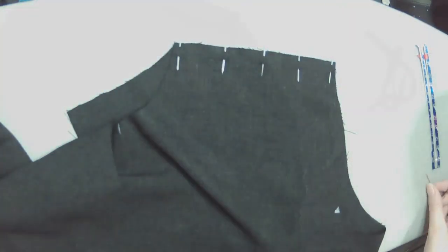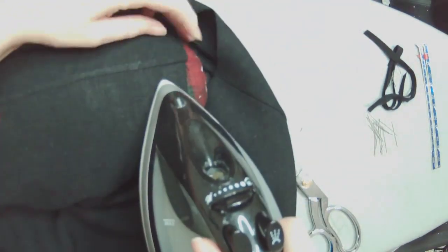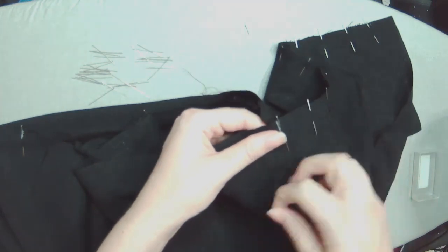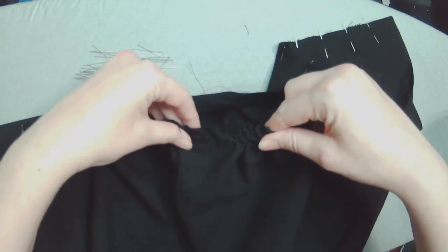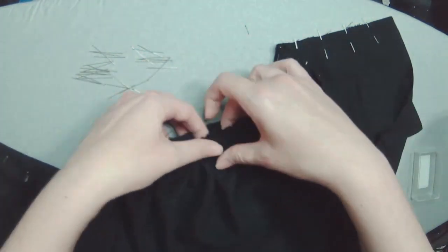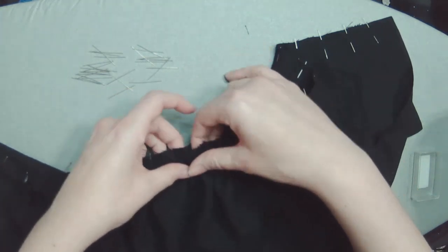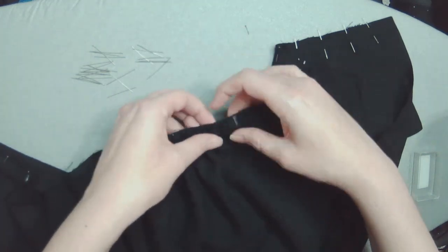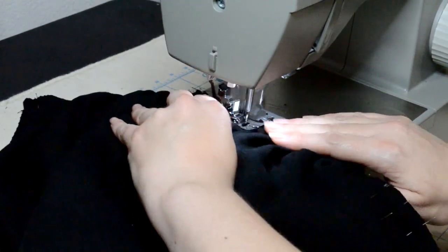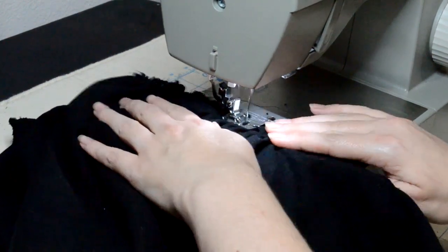Then the shoulder seams were sewn and finished in the same way. The center front was then gathered and the blouse pinned to the skirt. Then the waist seam was sewn and the edges finished, just like the side seams and shoulders.